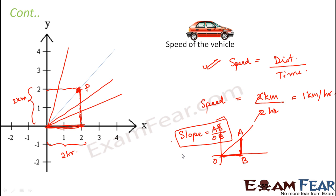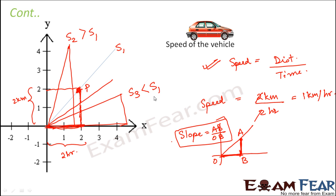If the line is steeper, the numerator (vertical distance) is larger, so the slope is greater. Calling the slopes s1, s2, and s3 for lines of increasing steepness, we get s2 greater than s1, and the flatter line gives a slope less than s1. As the line becomes more and more steep, the slope increases — and since slope equals speed, a steeper line on the distance-time graph means a higher speed of the vehicle.